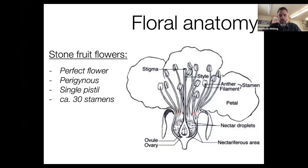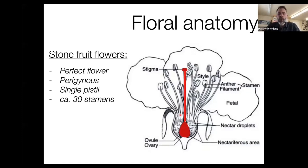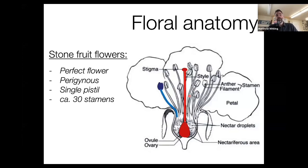Stone fruit flowers typically have 30 or so stamens surrounding the pistil, fused at the upper portion of the hypantheum cup. The key elements include the stigmatic surface, connected to the base by stylar tissue, and at the base of the pistil is the ovule containing two ovaries. This is the female portion — the pistil as these three elements combined. The male portion, the stamens, are comprised of the anther at the terminal end of the filament, connected to the hypantheum cup.